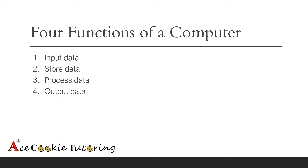Thank you, Jessica. Now we're going to talk about the four functions of a computer. The computer can do four basic operations, and all of the parts in a computer need to work together to perform these operations. These are: input data, store data, process data, and output data.